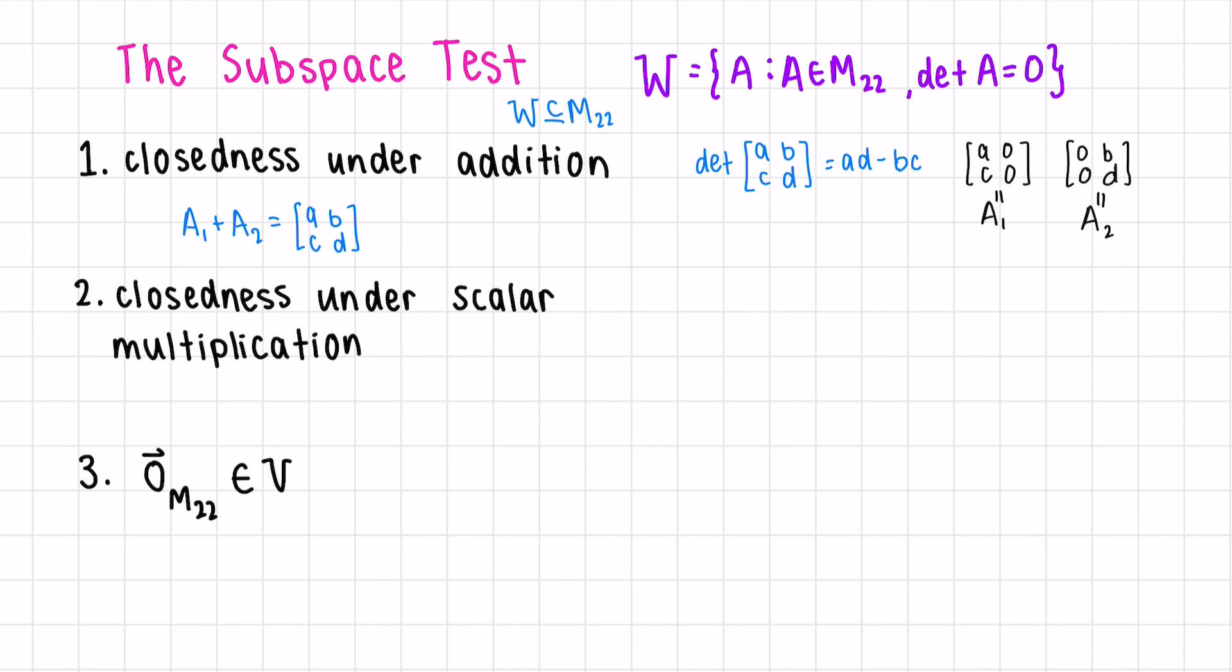Let's take the simplest case, A1 equals, with as many 0s as possible, 1, 0, 0, 0, and A2 equals 0, 0, 0, 1.